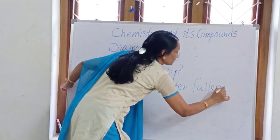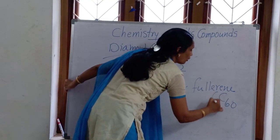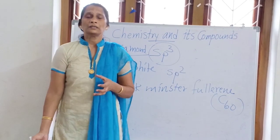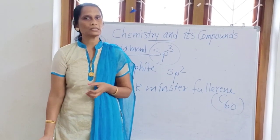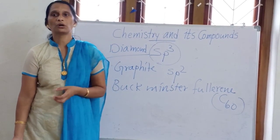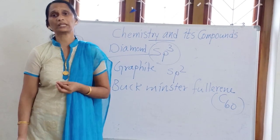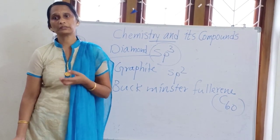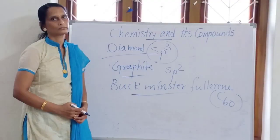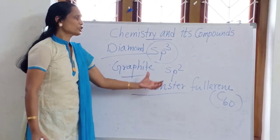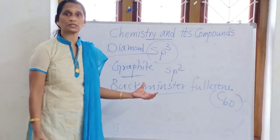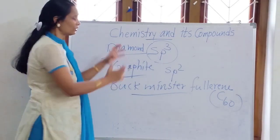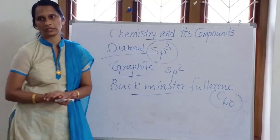Buckminster Fullerene is a spherical compound made of 60 carbon atoms, C60, with very many uses in medicine. It is used to kill cancer cells like melanoma cells in melanoma disease, used as an antibiotic, and also to control bacteria and fungal growth in water. In Buckminster Fullerene, carbon atoms are also in sp2 hybridization — the spherical arrangement is what gives it its strength.